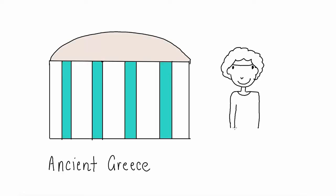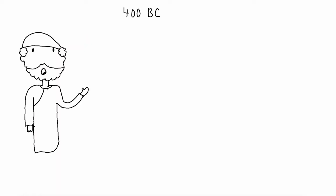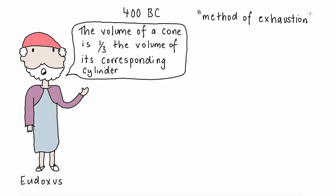In 400 BC, Greek mathematician Eudoxus used a method of exhaustion to find the areas and volumes of shapes. He discovered that the volume of a cone was one-third the volume of its corresponding cylinder.